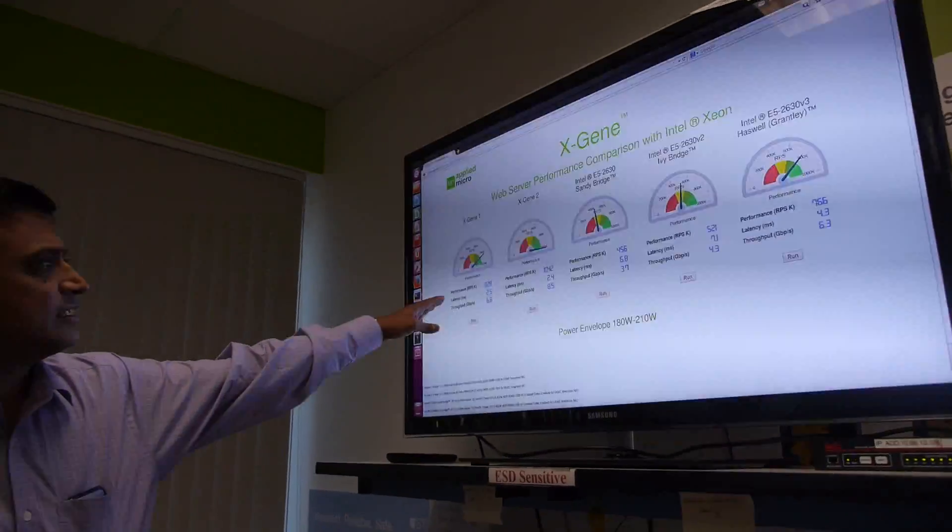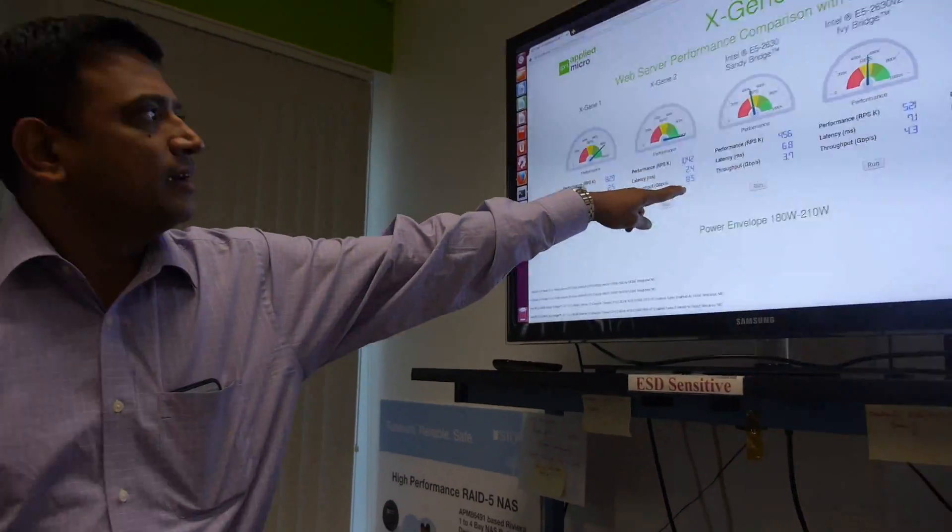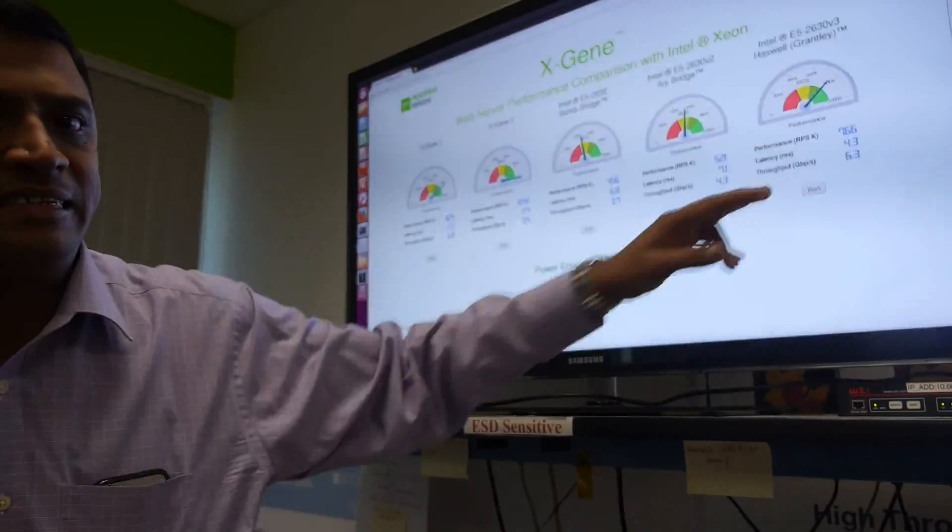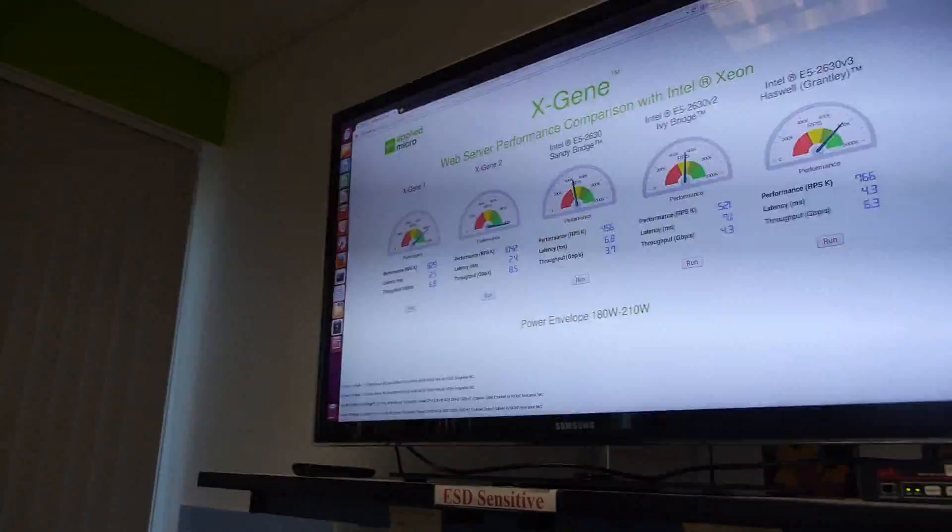You can see the performance here. X-Gene 1 at 829, a little over 1 gig, and then 456, 521 at 766. You can see that the X-Gene 1 performance is greater than the latest and greatest from Intel, which is the Haswell platform at 766. And X-Gene 2 is just the next level.